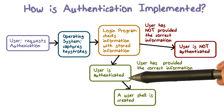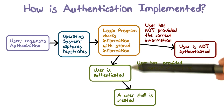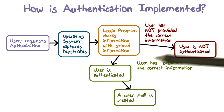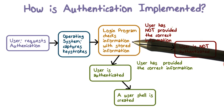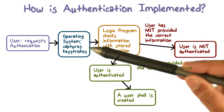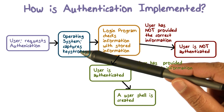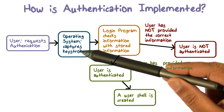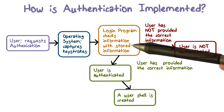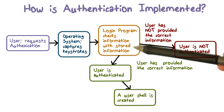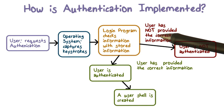This is how the authentication process is implemented. We have to read or capture the evidence, compare it, and then decide whether there's a match or not, and go either the success path or the failure path.